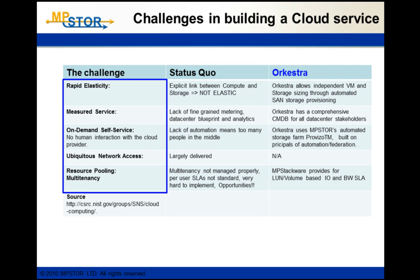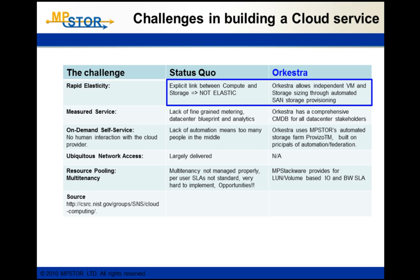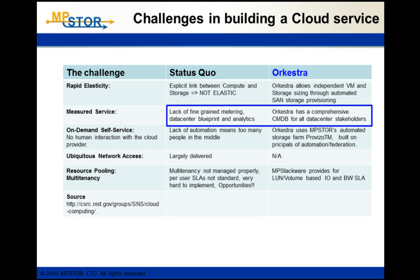If we look at the challenges in building a cloud service, the nist.gov website lists a number of challenges such as rapid elasticity, measured service, on-demand self-service, etc. Not all of those challenges are met by the status quo, but with Orchestra we've improved upon that. On the issue of rapid elasticity, we allow independent virtual machine and storage sizing by using our automated SAN storage provisioning. In terms of measured service, Orchestra has a fairly comprehensive common management database which collects all of the statistics for the data center, for all data center stakeholders.